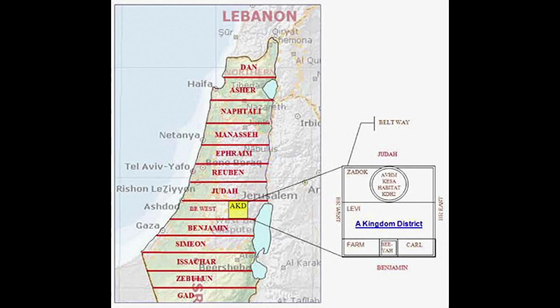One thing specifically: back in 1948 when Israel became a nation, if they had read some of these verses I think it would have saved a lot of heartache for a lot of people. Chapter 45 verse 1: 'Moreover, when you divide the land by lot into inheritance, you shall set apart a district for the Lord, a holy section of the land, and its length shall be 25,000 cubits and its width 10,000, and it shall be holy throughout its territory all around.'